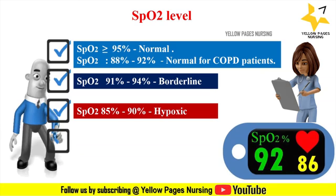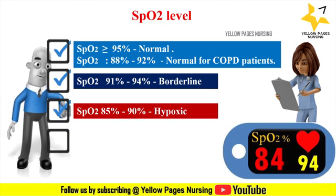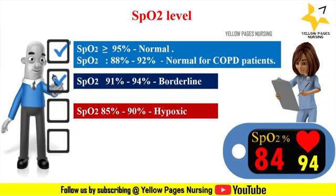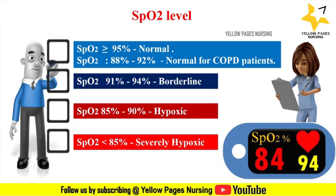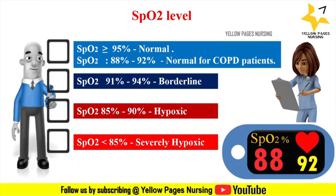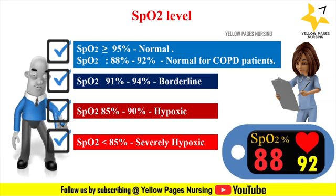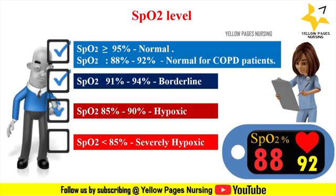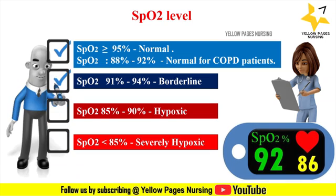An SpO2 range between 85% and 90% indicates hypoxia. An SpO2 level less than 85% indicates severely hypoxic status. Interventions include assessing the airway and suctioning as needed, administering oxygen titrated to SpO2 greater than 95%, positioning the patient with the head of the bed elevated, and encouraging the patient to cough. If the condition worsens, assist ventilations manually and consider intubation.